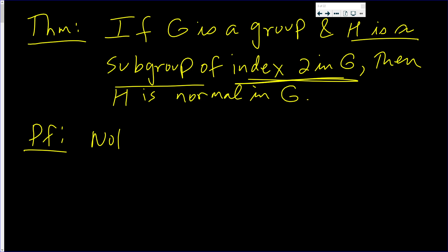So note the following: HE, which is H, is a right coset of H in G.